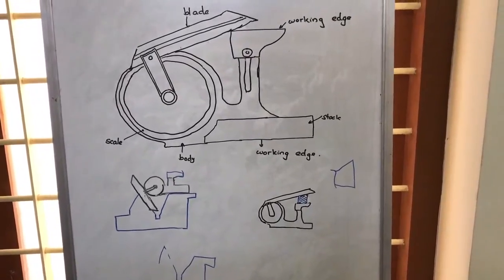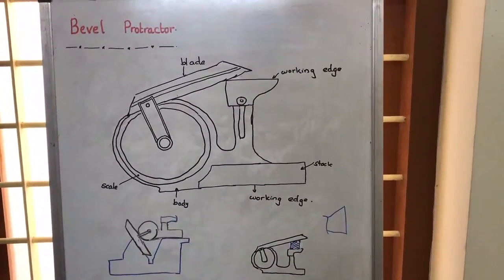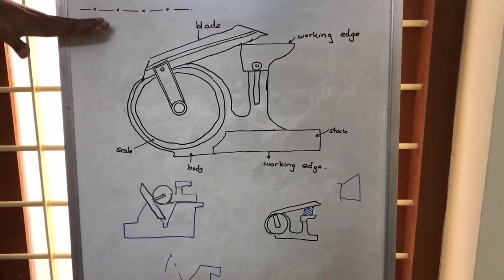We are able to measure the angle from this scale. This is how we use a bevel protractor to measure various angles.